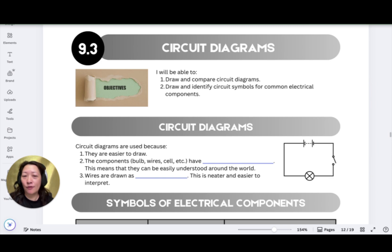So first of all, let's go through what circuit diagrams are. Circuit diagrams are simple diagrams to represent the electrical circuit. So for electrical circuits, we don't normally draw the actual batteries or the actual components because it can be quite complicated to draw. Rather, we use simplified diagrams that look like these. So circuit diagrams are used because they are easier to draw. And the components within the circuits, that means the bulb, the wires, the cell, all have symbols. This means that they can be easily understood around the world. So whatever language that you're speaking, the symbols are universal. So anywhere in the world who looks at the circuit diagrams, they will know how to interpret it.